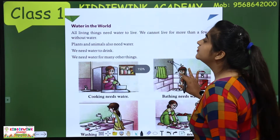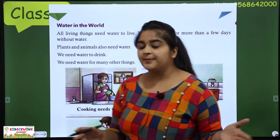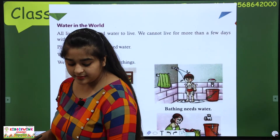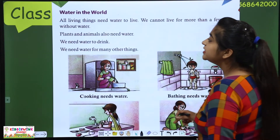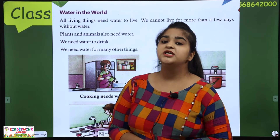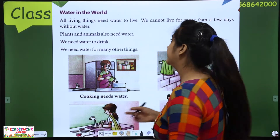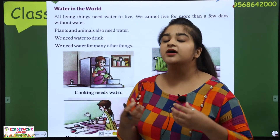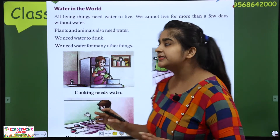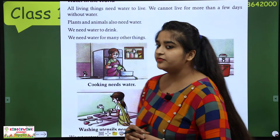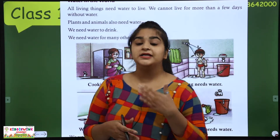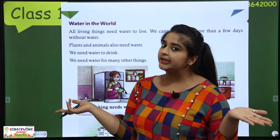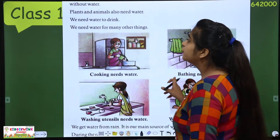Let's go to the next page: Water in the World. What was the name of our chapter? Air and Water. So we have read about air, now we will read about water. All living things need water to live. We cannot live for more than a few days without water. Plants and animals also need water. And we need water to drink.